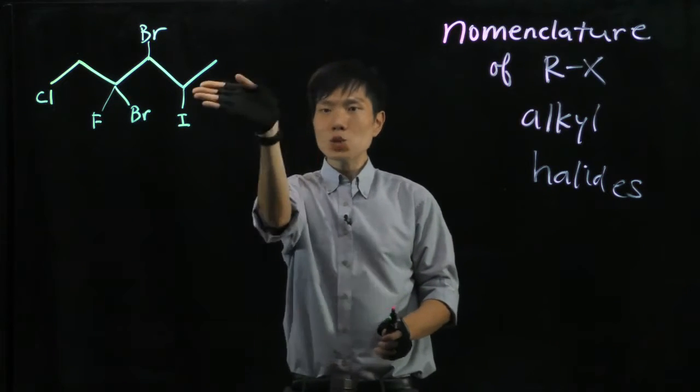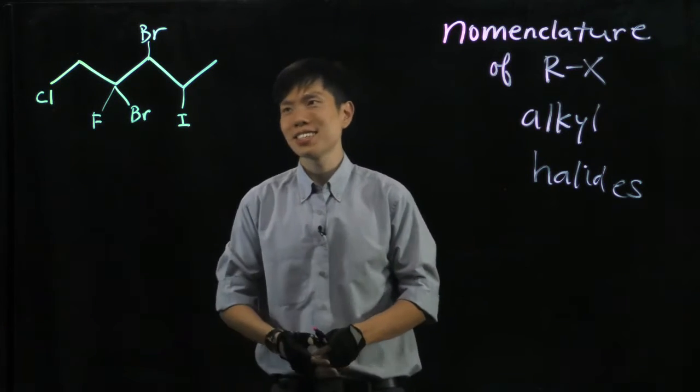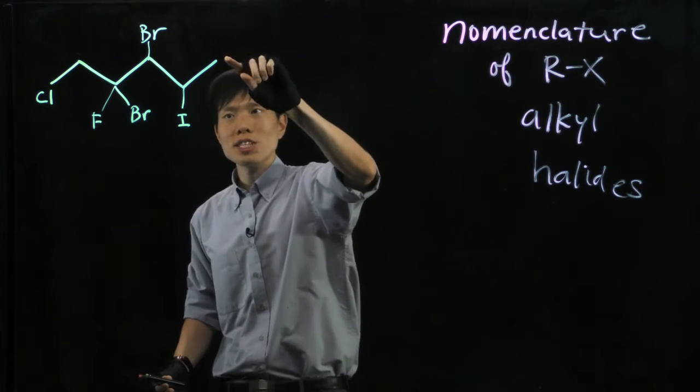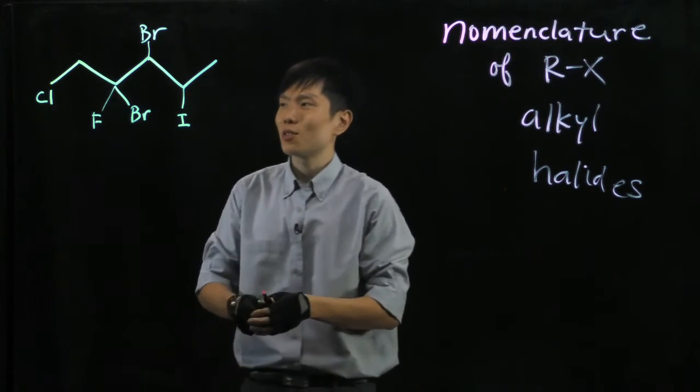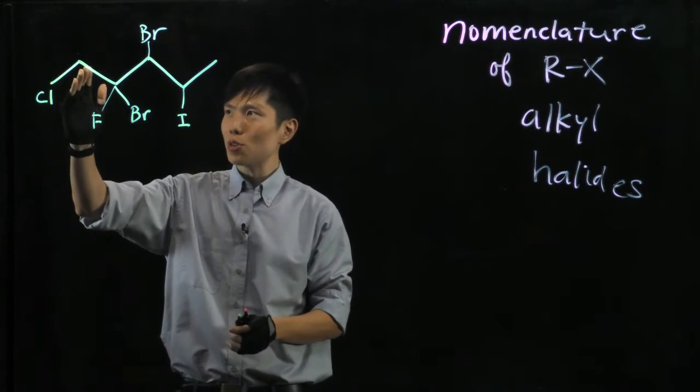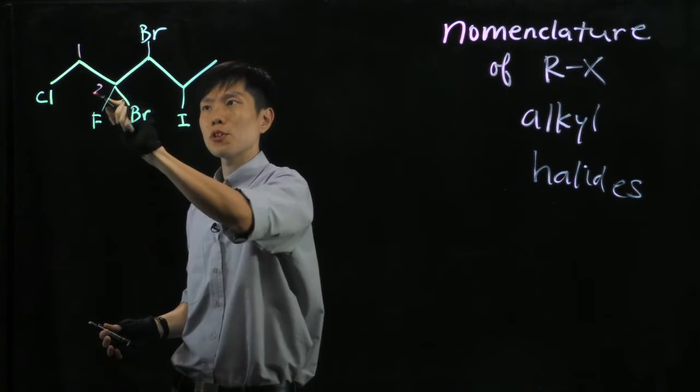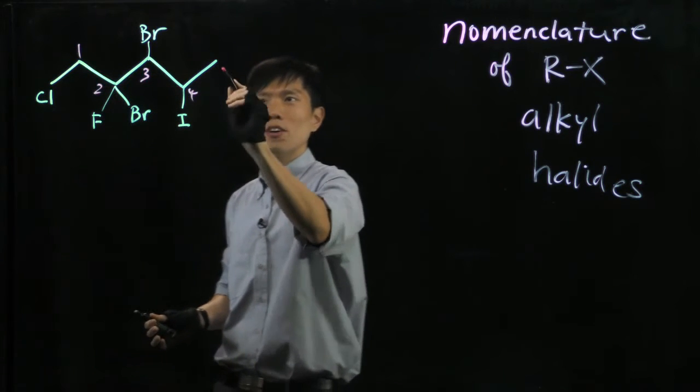Do we count from this way or the other way? We have to see, going from the right, we will reach the first substituent on the second carbon. Going from the left, the first substituent is on the first carbon. So we have to label this as 1, 2, 3, 4, and 5.